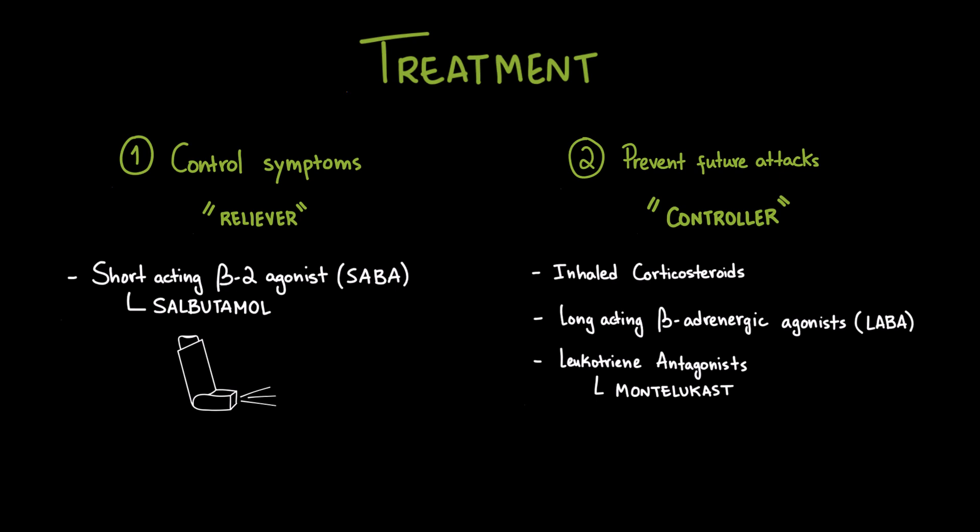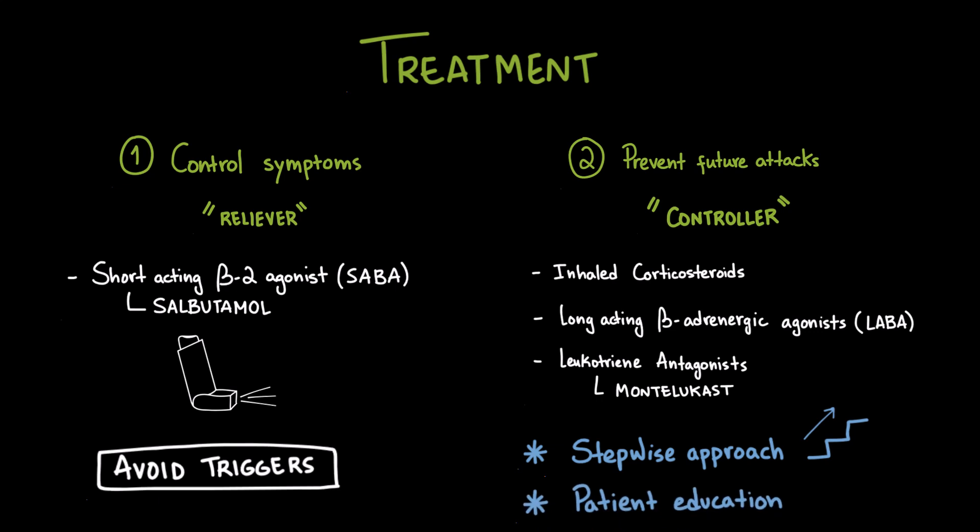Besides medication, trigger avoidance is essential. This means reducing exposure to allergens, quitting smoking, controlling environmental irritants, and treating comorbidities. It's important to note that treatment follows a stepwise approach. This means that therapy is adjusted up or down depending on how well symptoms are controlled. Finally, patient education plays a critical role. Patients should understand how to use their inhalers correctly, recognize early warning signs of an attack, and have a personalized asthma action plan.